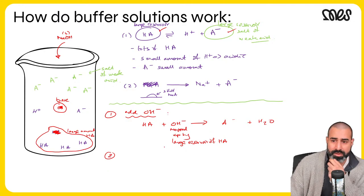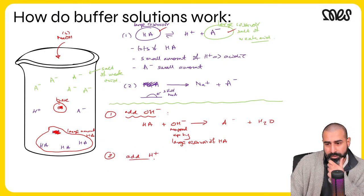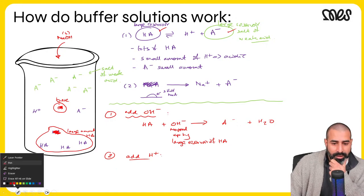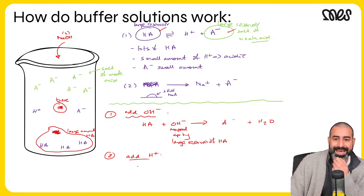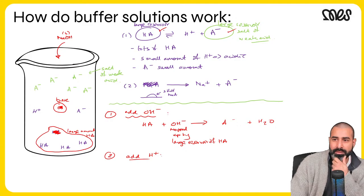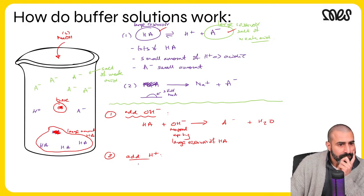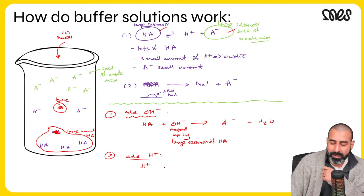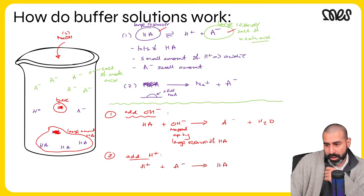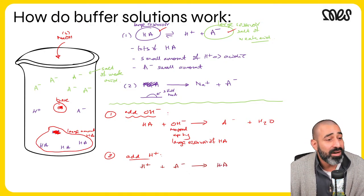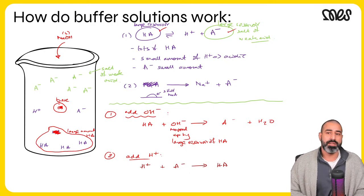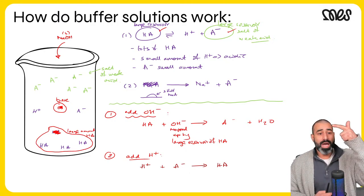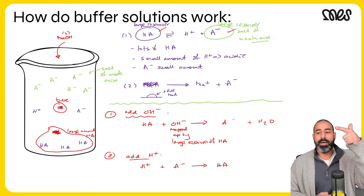Scenario two: adding acid (H+). The added H+ will react with the large reservoir of A⁻ rather than HA: H+ + A⁻ → HA. This is buffers in a nutshell — a two-component system with a weak acid and its salt. Whatever you add, it only reacts with one of the two large reservoirs, keeping the pH nearly constant.